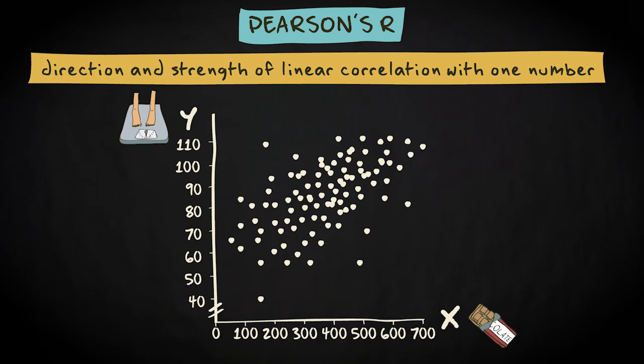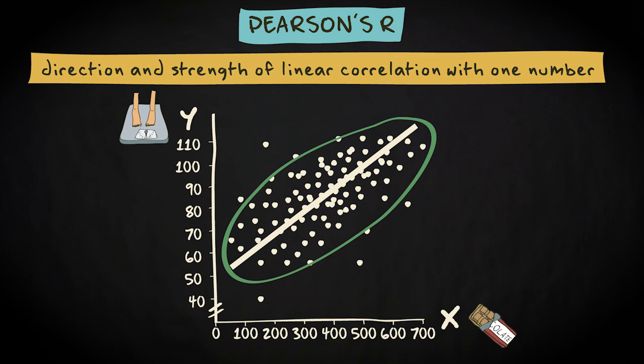The relation between chocolate consumption and body weight can best be described by this straight line. Because all cases cluster closely around the line, we can conclude that this is a rather strong correlation.